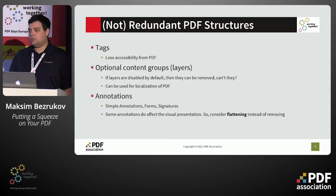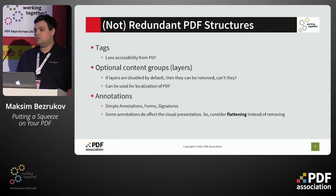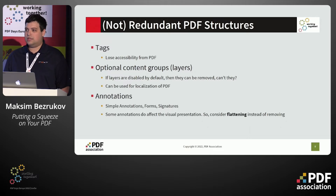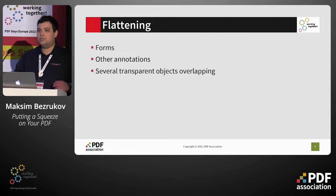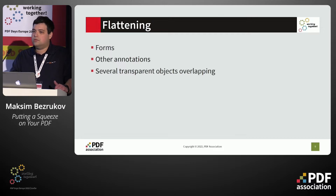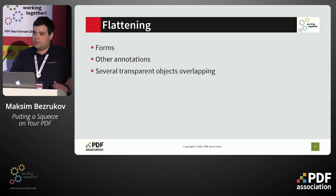Also annotations: some annotations don't affect visual appearance while others do. For removing annotations, it's better to consider flattening them first and then removing the annotation objects. Flattening means the operation which puts the appearance of the object directly into the page's content stream. For example, any forms can be flattened by drawing them directly in the page, and transparent objects which overlap one another can be flattened into a single one or even into the page content stream.